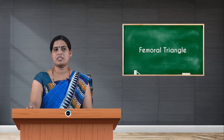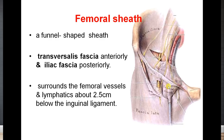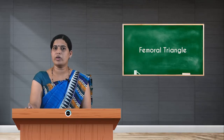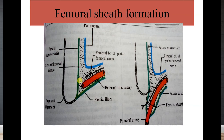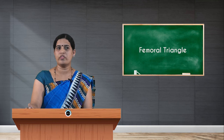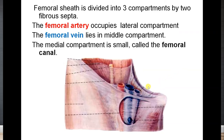The femoral sheath is an extension of the fascia of the abdomen — the transversalis fascia and the fascia iliaca — that passes beneath the inguinal ligament. The anterior layer of the femoral sheath is formed by the fascia transversalis, whereas the posterior layer is formed by the fascia iliaca. This extension of fascia continues only 2.5 centimeters distal to the inguinal ligament. The femoral nerve is not a content of the femoral sheath because it passes behind the fascia iliaca before appearing in the femoral triangle.